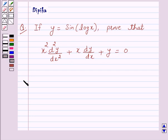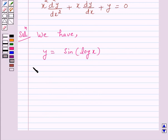So let's start the solution. Now we have y is equal to sin of log x. Therefore, dy by dx is equal to cos of log x into derivative of log x which is 1 over x.